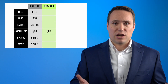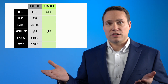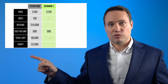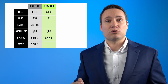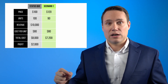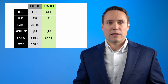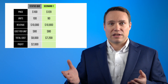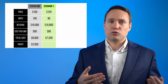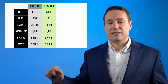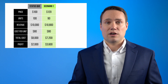In our first scenario, when the price is increased by $20, units sold drop to 90, which means that the total costs go down to $7,200. With revenues of $10,800 and reduced total costs, profits increase to $3,600.